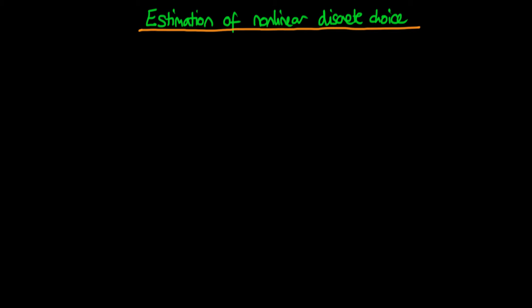In this video I want to talk about how we would go about estimating nonlinear discrete choice models. The idea is that we have a dependent variable y which is discrete, so it might be a binary dependent variable, and we have talked about how we should take a nonlinear transformation of our independent variables. We use this function F, where F could be a logit or a probit model.